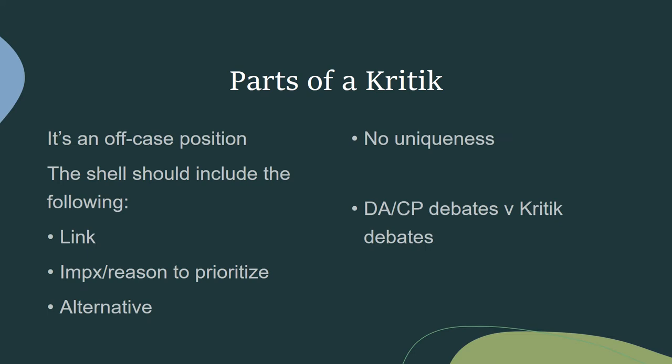Let's talk about the parts of the critique. The critique is an off-case position. Its shell includes the following: generally a link, an impact, potentially a reason to prioritize or view the debate differently, and an alternative — a different approach to the world. What you don't see in this shell that you may see in a disad is uniqueness. The critique is focused on the 1AC and the choices that go into creating the 1AC and what story it tells — the worldview.